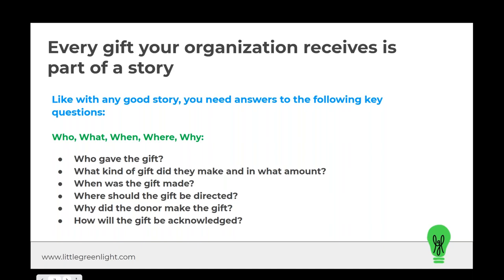If you don't prioritize good and consistent gift entry, you're deciding that it's okay for the story to end with a donor after just one chapter. Each time a gift comes in, there are certain questions you need to be able to answer: Who gave the gift? What kind of gift did they make and in what amount? When was the gift made? Where should it be directed? Why did the donor make the gift? And how will the gift be acknowledged?